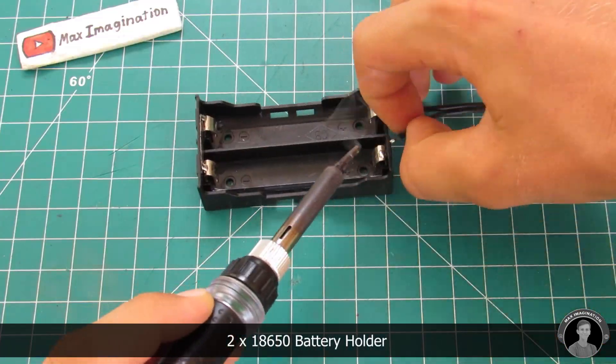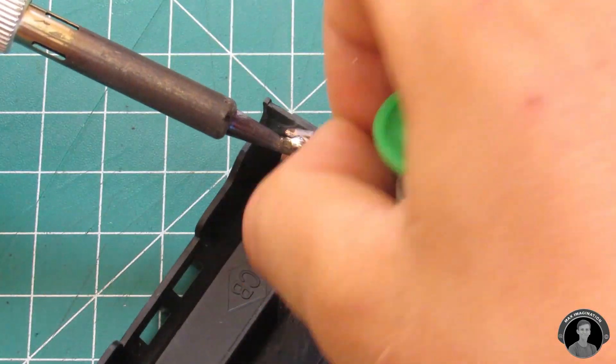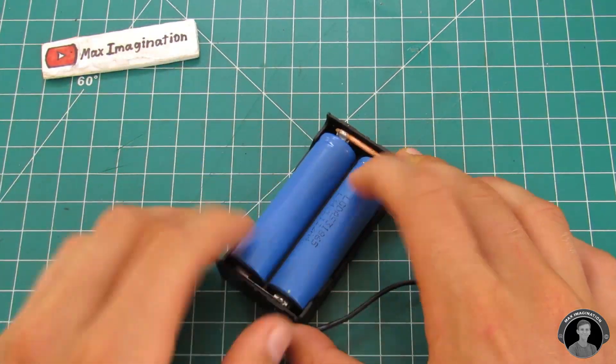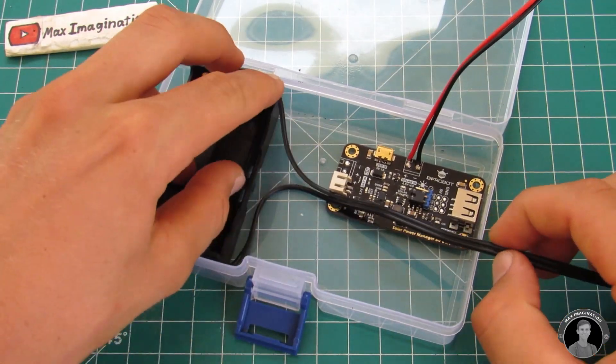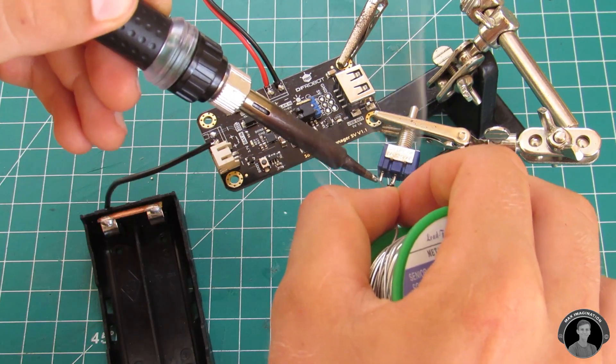Then we're going to rewire this two cell lithium battery holder so that it is instead in a parallel configuration. Now when you clip two lithium ion batteries into the case, their positive terminals are now connected. Then you're going to want to hook up the two wires coming from this battery pack to the battery input terminal on the board through a switch.